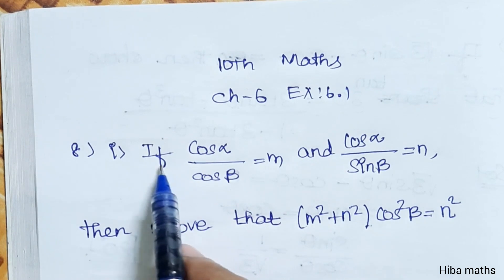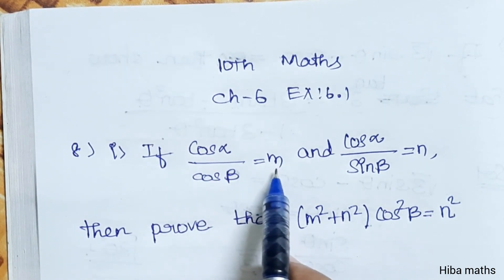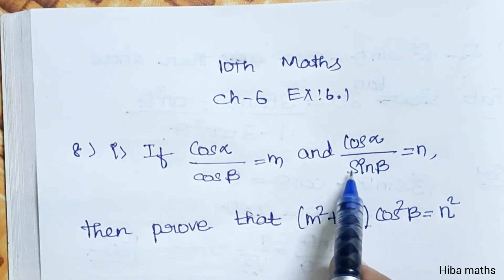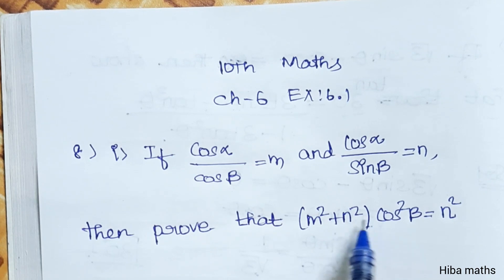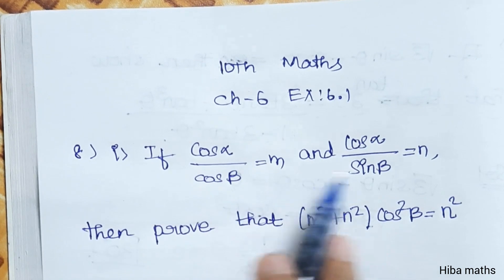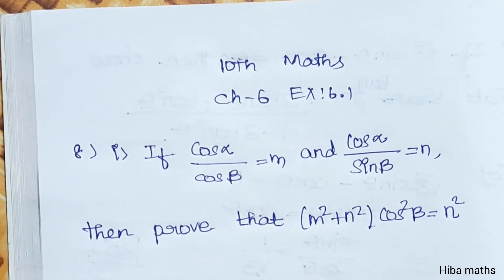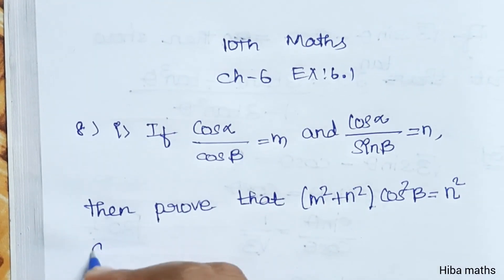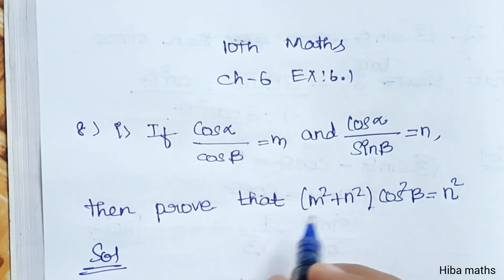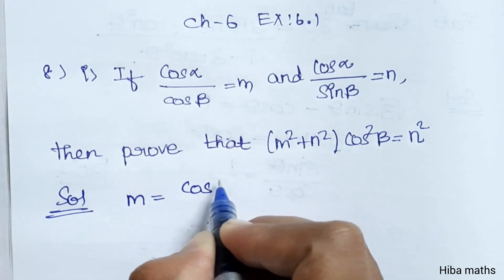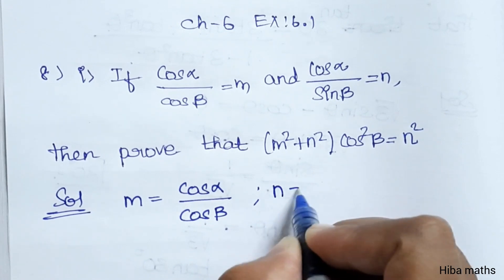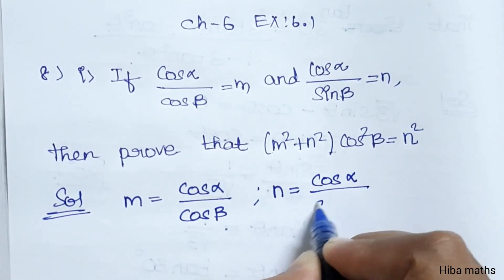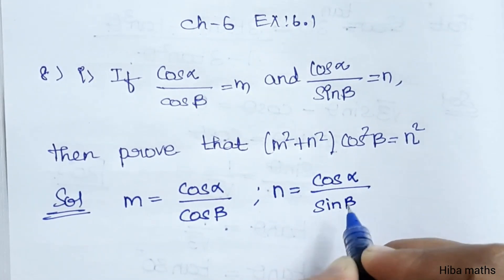First subdivision: if cos α / cos β equals m and cos α / sin β equals n, then prove that (m² + n²) · cos²β equals n². We have two givens and one proof to solve. In the solution, m equals cos α / cos β and n equals cos α / sin β.